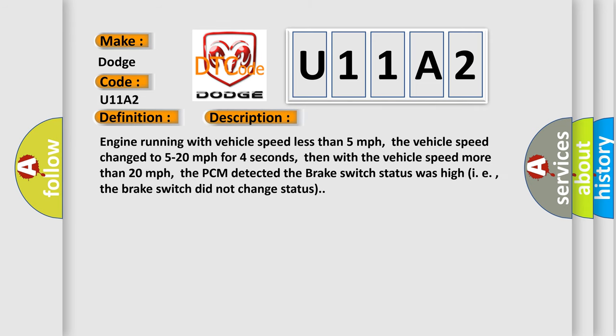Engine running with vehicle speed less than 5 miles per hour, the vehicle speed changed to 5 to 20 miles per hour for 4 seconds. Then with the vehicle speed more than 20 miles per hour, the PCM detected the brake switch status was high, i.e., the brake switch did not change status.